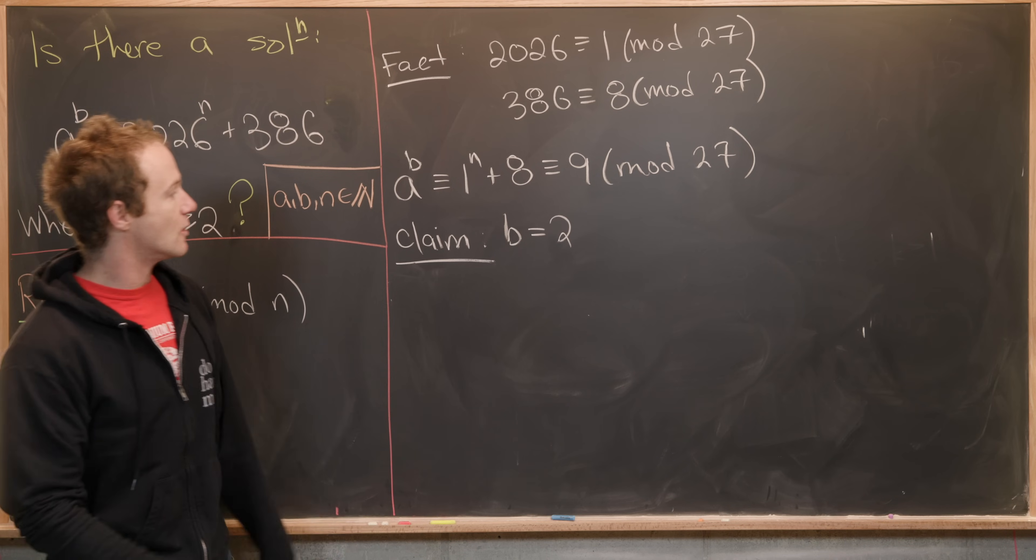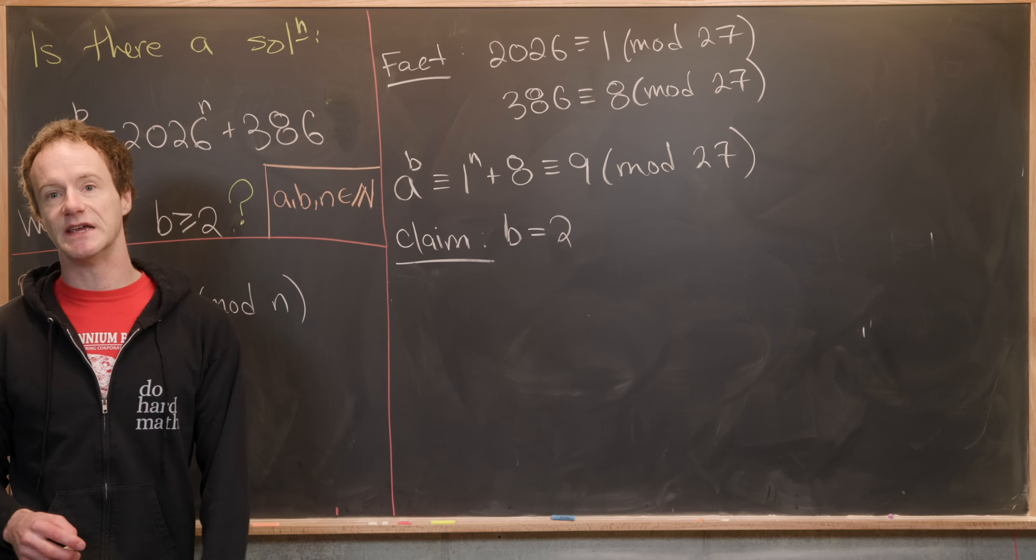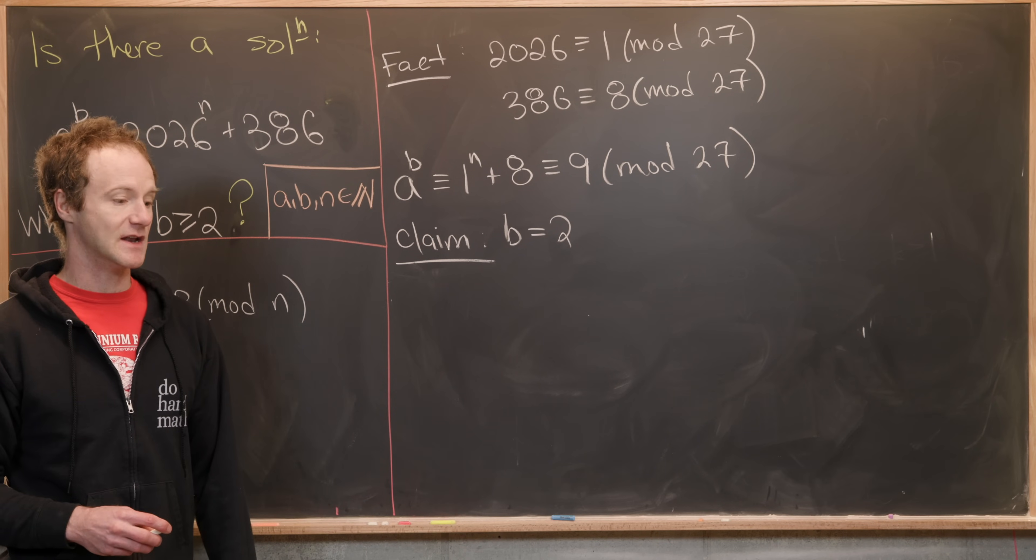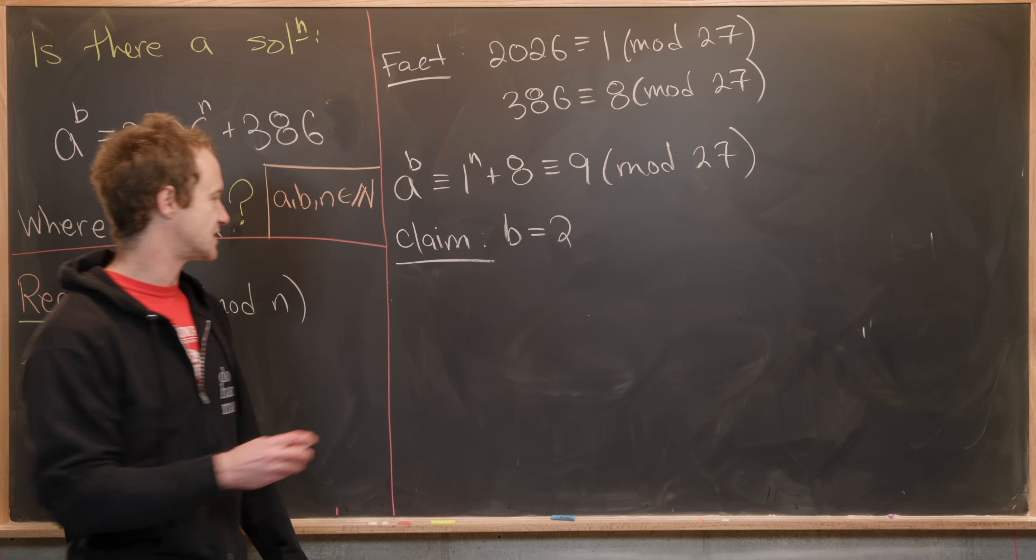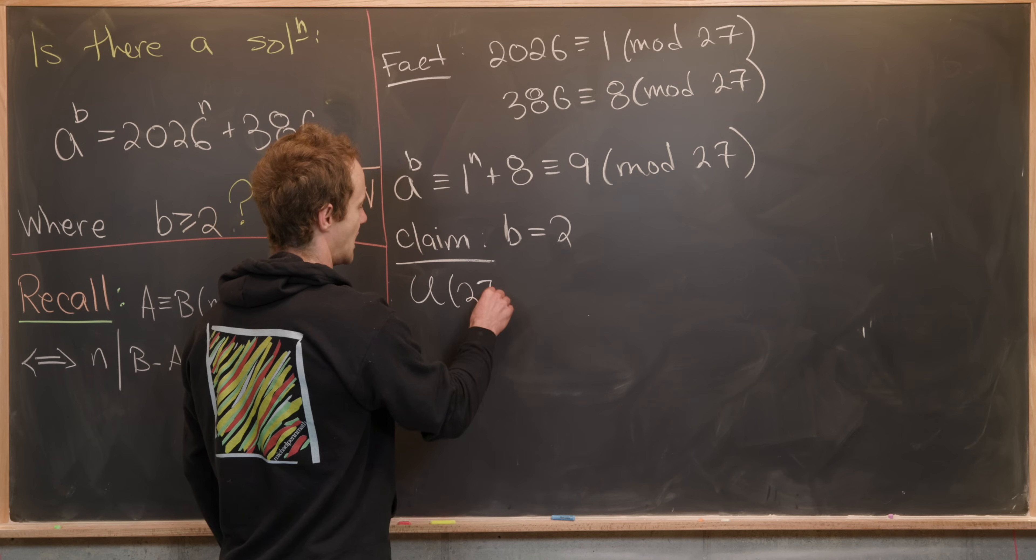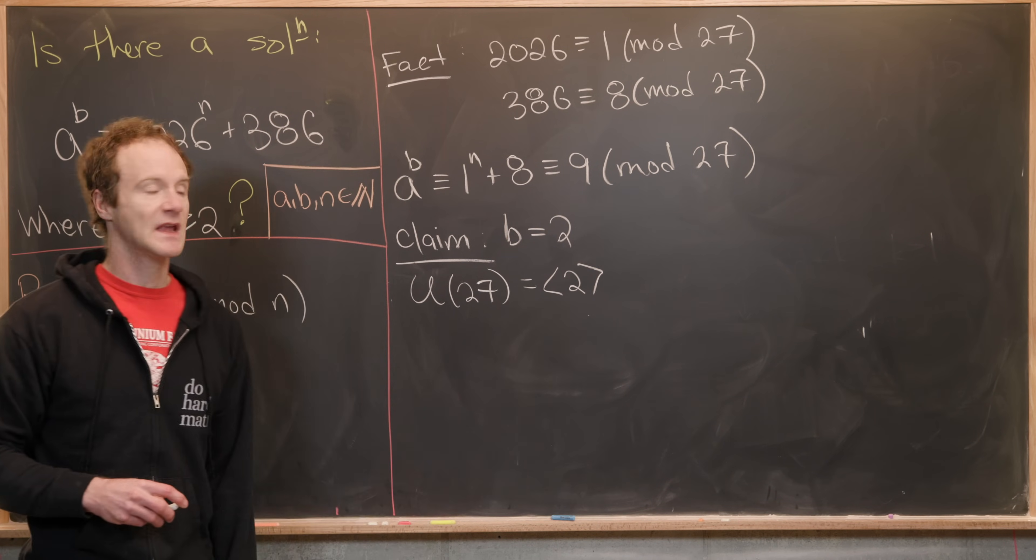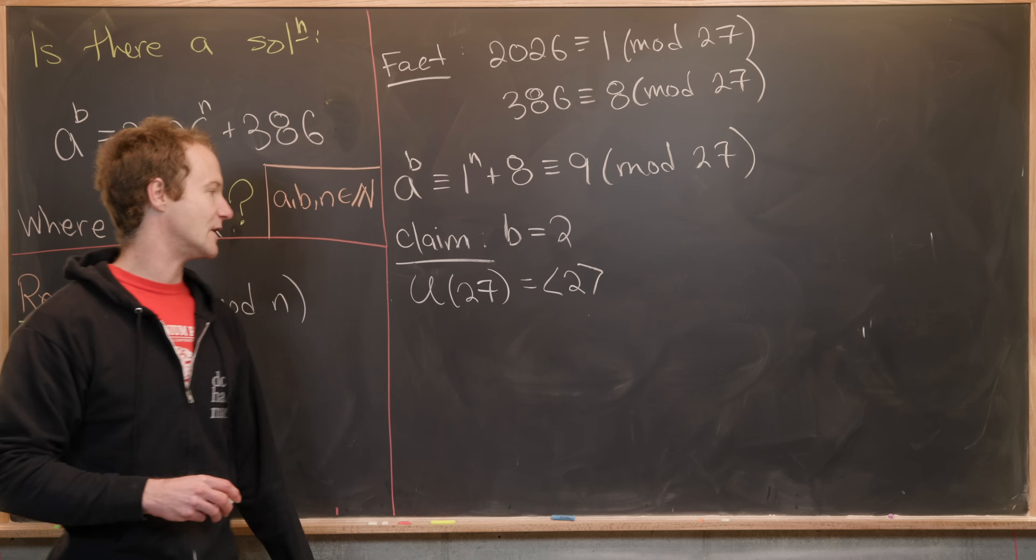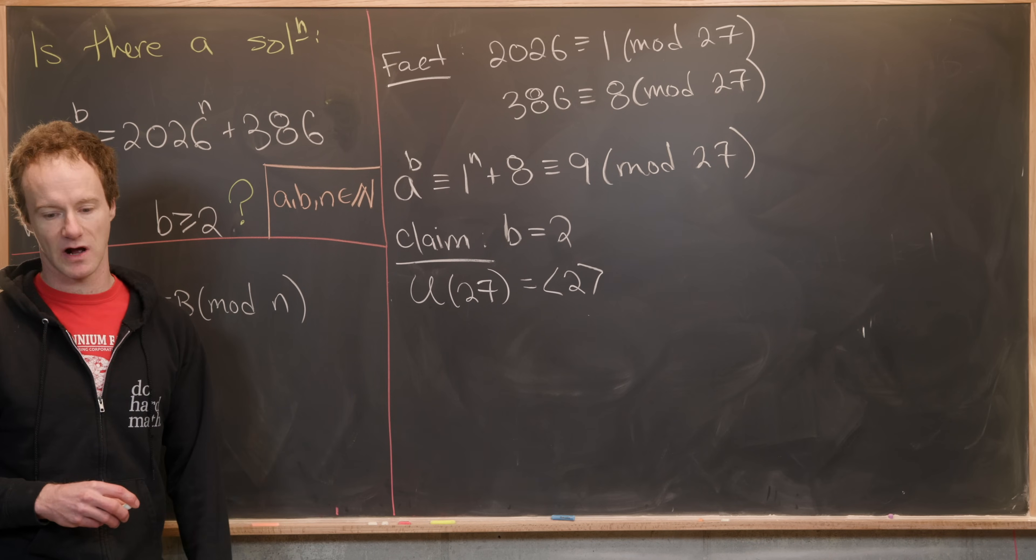So we know that the group of units modulo 27 is generated by the number 2. So you guys can check that but that's not too hard to check. So we can write that like this. The group of units mod 27 is generated by 2.